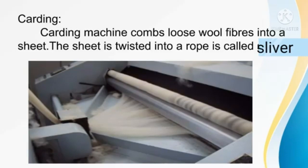Next, carding. After combing, the fibers are converted into a thin sheet-like structure — this process is called carding. The carding machine combs loosened wool fibers into a sheet, which is then twisted into a rope called a sliver.